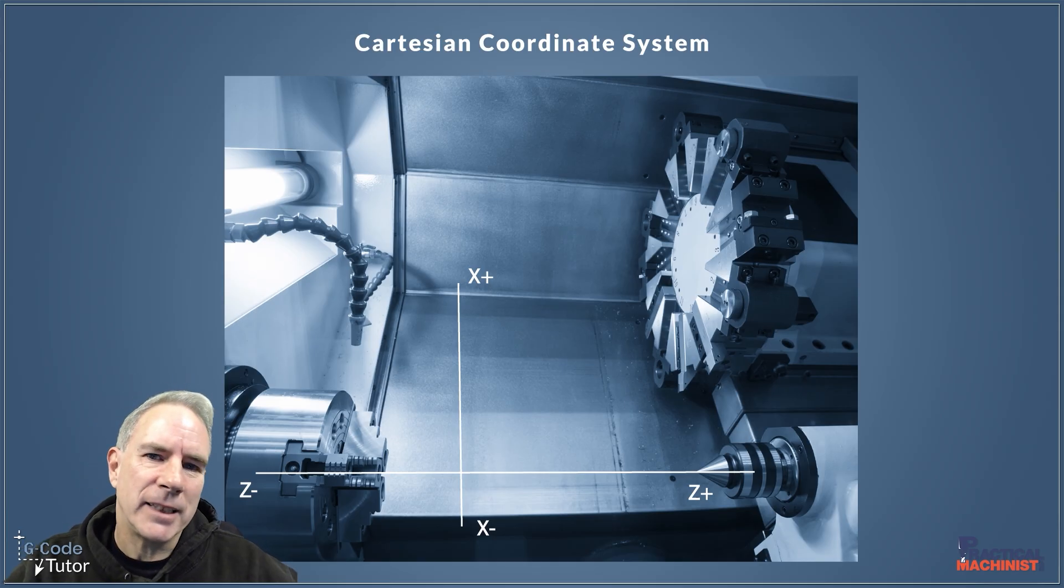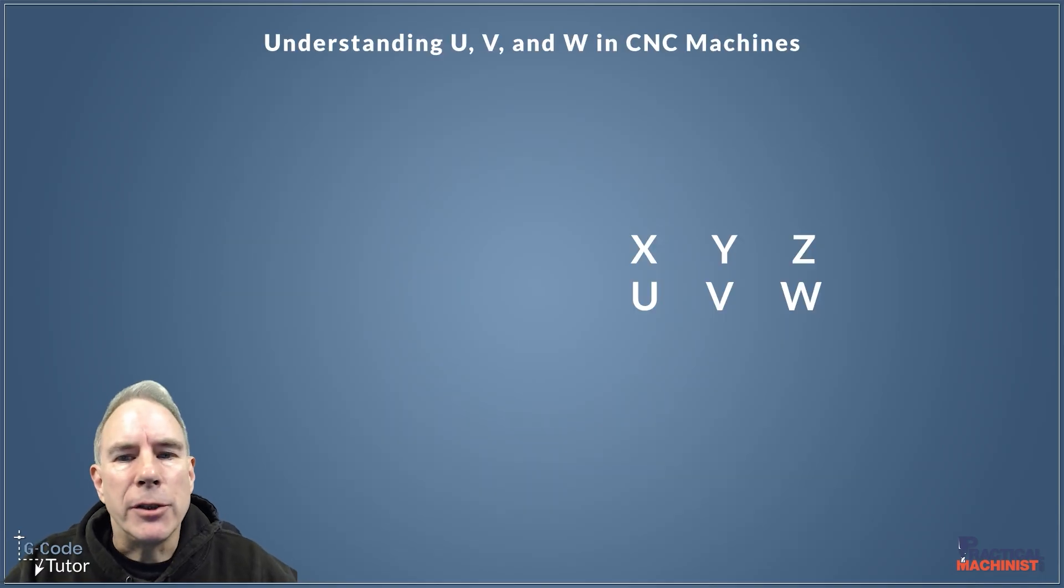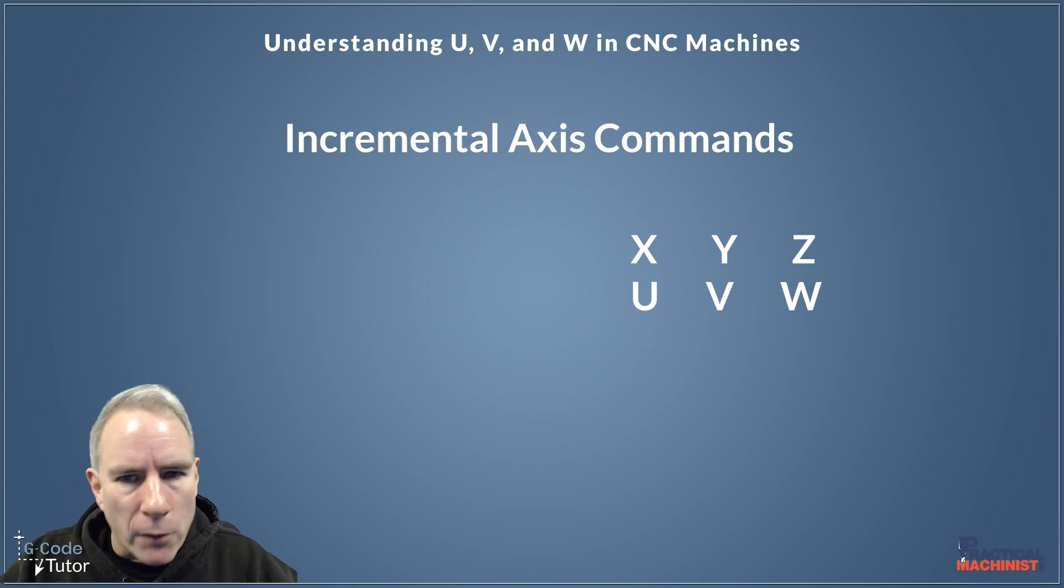Okay, so that's our X, Y, Z. Now let's move on to UVW, the next axes in our list here. So these, we call them axes, but they're actually incremental movements of those particular axes. Now we generally use it mostly with turning, but it can be used in milling.